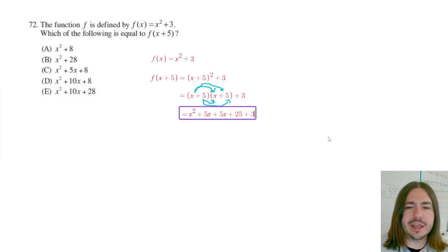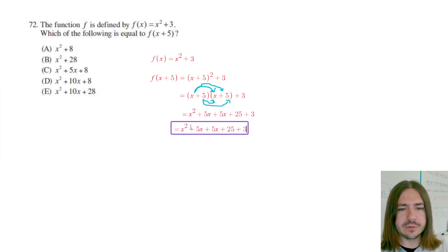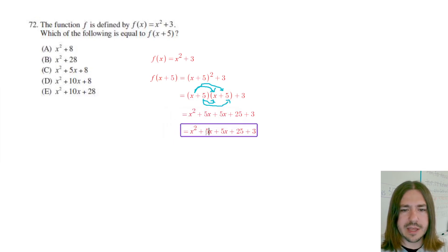We have this +3 just hanging out there. Lastly, we need to combine our like terms. 5x + 5x is 10x, and 25 + 3 is 28.